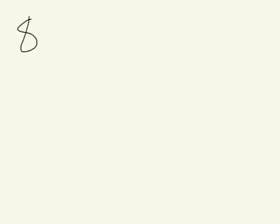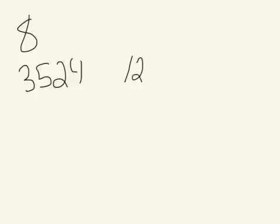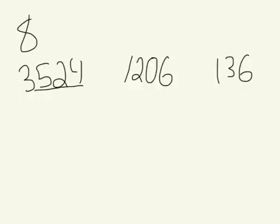Now we're going to take a look at 8 — we'll look at 5 after this. So we'll look at the divisibility rules for 8, which builds on 2 and 4 as well. Let's take some different numbers: 3,524, 1,206, and 136. For 8, instead of looking at the last digit like we did for 2, or the last 2 digits like we did for 4, we have to look at the last 3 digits.